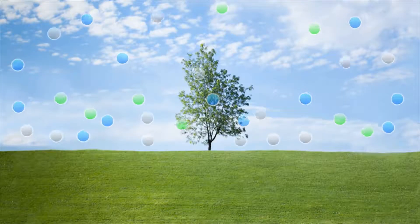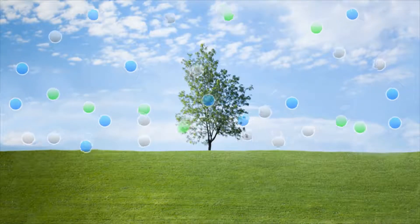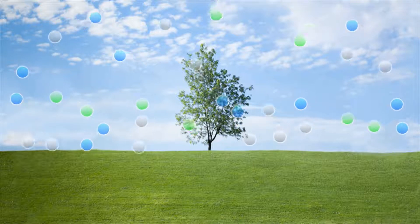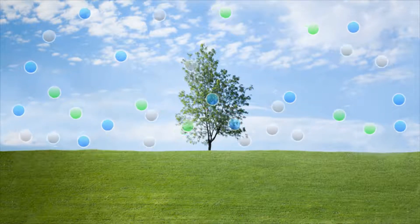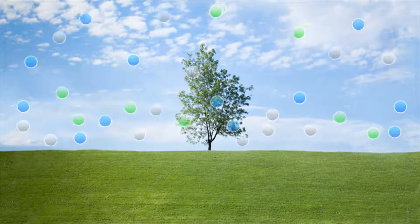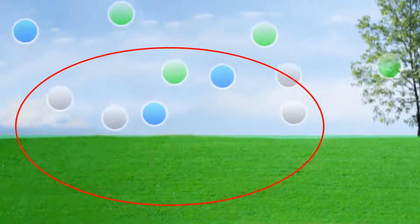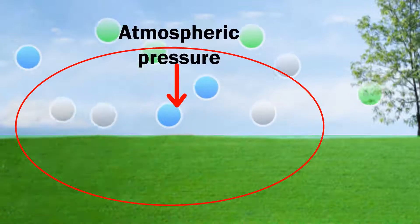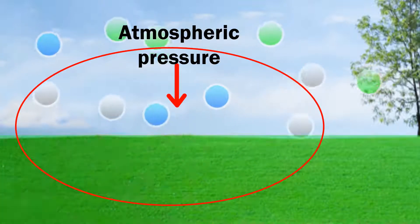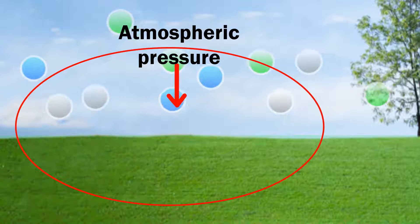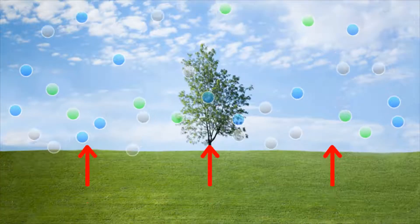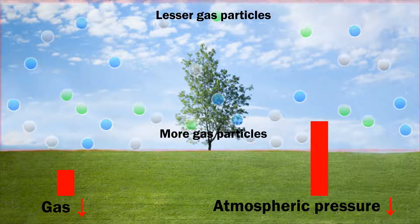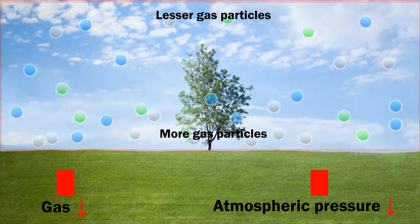We all know that the atmosphere contains different types of gas particles and these particles move around freely. Once these particles strike a surface, they exert some pressure. This pressure is called atmospheric pressure. As we move away from the ground, the amount of gas reduces and thus atmospheric pressure also decreases.